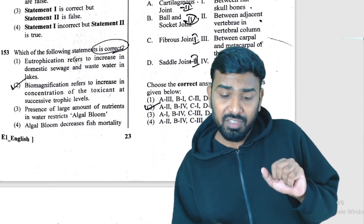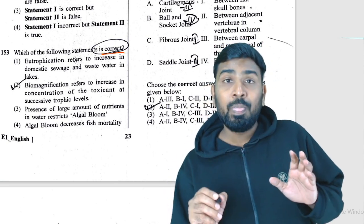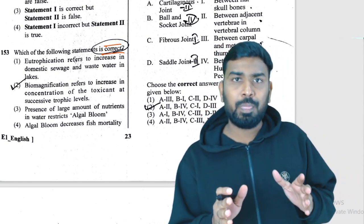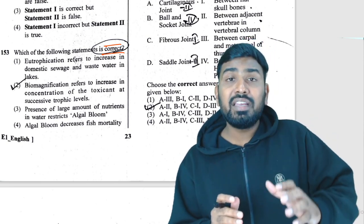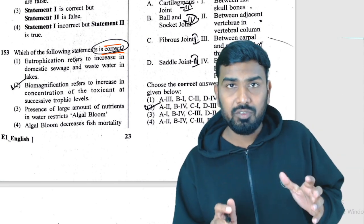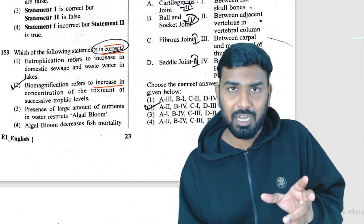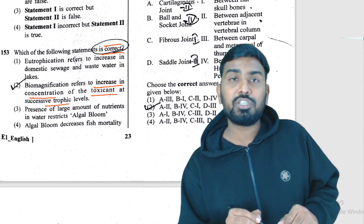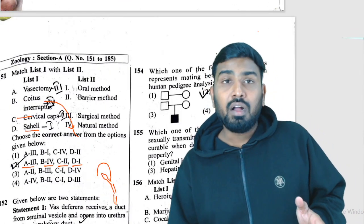Question 153: identify the correct statement. Biomagnification is the accumulation of toxic substances at increasing concentration at successive trophic levels — for example, DDT increases at each successive trophic level. So question 153 answer is option 2.